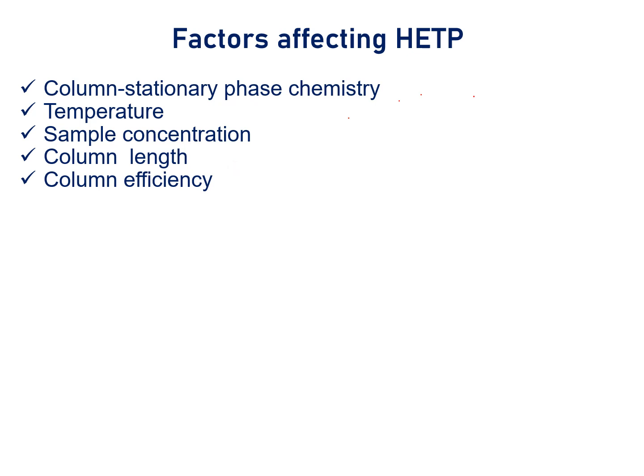Fifth, column efficiency: HETP is inversely proportional to the column efficiency — higher the column efficiency, lower is the HETP, and better is the column. This is all about this session.